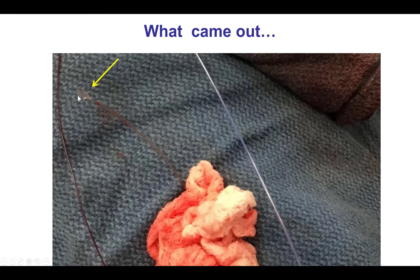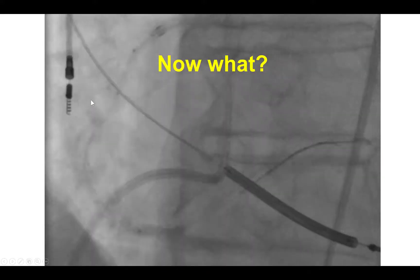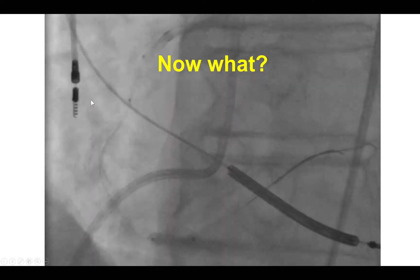My initial impression was that this was actually the balloon material itself — that the balloon had ruptured halfway in, and the balloon material came out. Of course, retrospectively, it's a little interesting that we didn't have the nitinol wires come out here, which are part of the nitinol balloon.